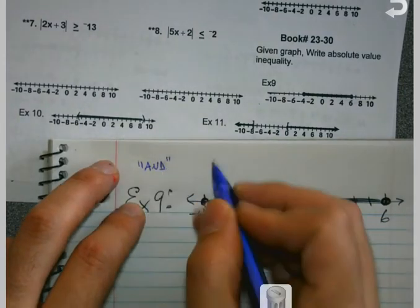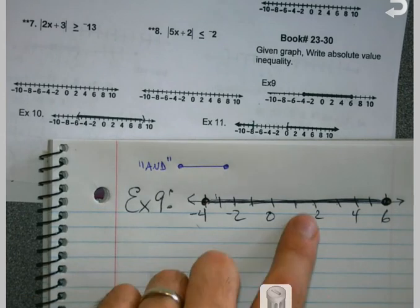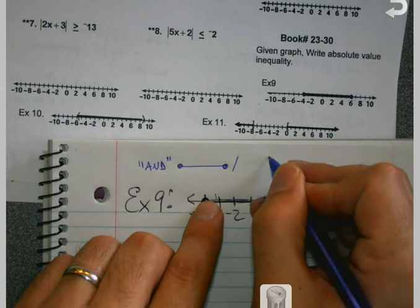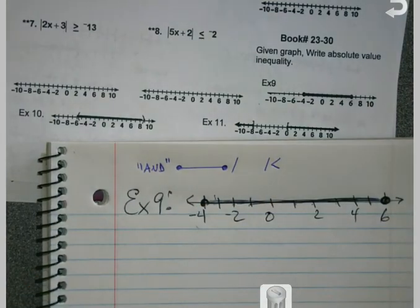If we're AND statements, those typically are the ones where I've got two endpoints and they come together. So this looks like it's an AND statement. And AND statements, when we have absolute value inequalities, typically are when we've got the arrow pointing at it, the less than.